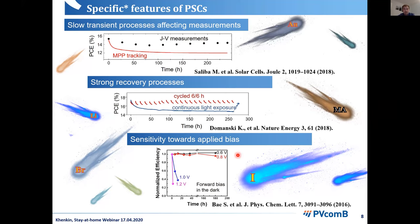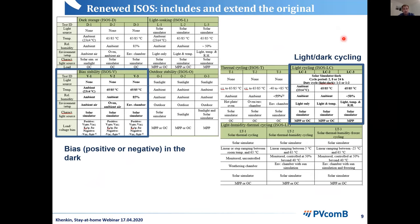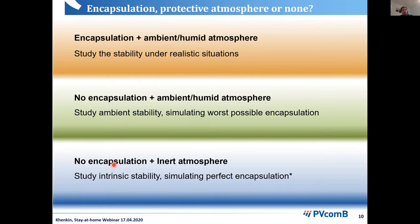At the protocol level, two new families were added: one with light-darkness cycling and one with positive or negative bias application in the dark. The most important discussion when designing stability experiments is the impact of water and oxygen, and different approaches are being debated. One approach is to encapsulate devices like real solar cells and then put them into a humid or ambient atmosphere to study stability.